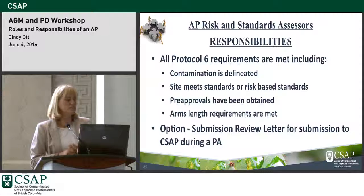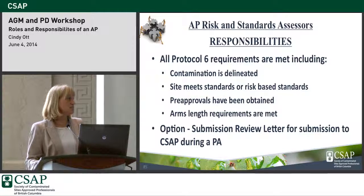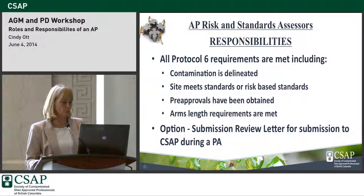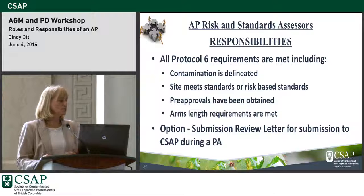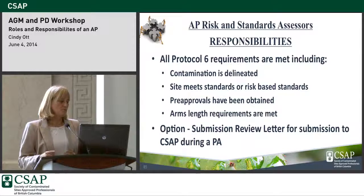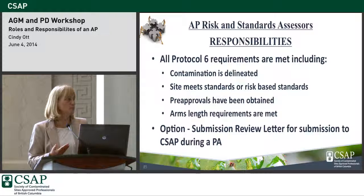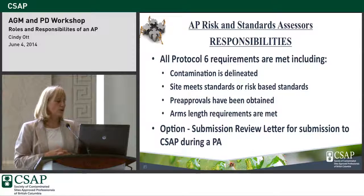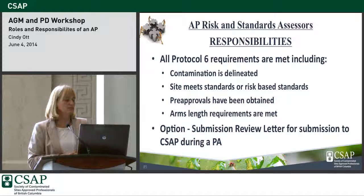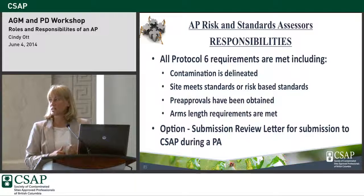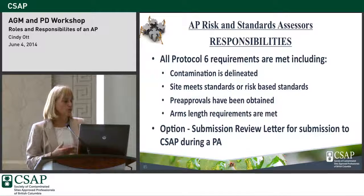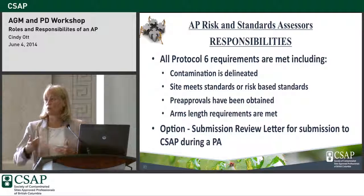Another responsibility: you have to make sure all Protocol 6 requirements have been met — that contamination is delineated, the site meets standards or risk-based standards, all pre-approvals have been obtained, and arm's length requirements have been met. These P6 requirements apply to both the standards and the risk assessor. One option always available to an AP is to write a submission review letter using the template on the CSAP website — it helps your review, and if there's a performance assessment you can submit it to CSAP.